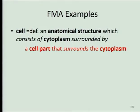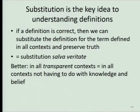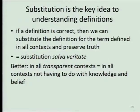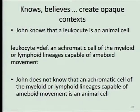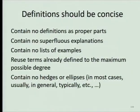Substitution: if a definition is correct, we can substitute the definition for the term defined in all contexts and preserve truth. That's not quite true — what we mean is in all transparent contexts. It could be that somebody understands the term but doesn't understand the definition. That's not a transparent context — that's an opaque context, which involves knowledge or belief. So John knows that a leukocyte is an animal cell, but he does not know that an achromatic cell of the myeloid or lymphoid lineage capable of amoeboid movement is an animal cell.